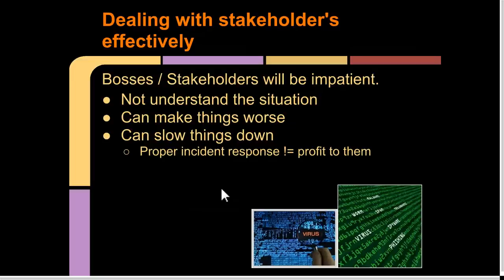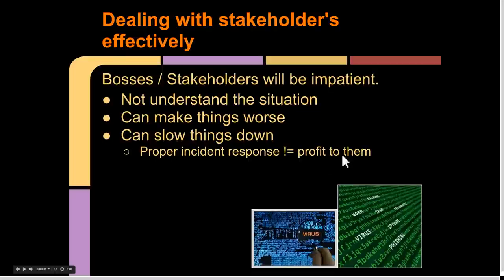Dealing with the stakeholders effectively: the executives won't understand the situation and they can often make things worse. They can often slow things down by constantly harassing and checking on the team. And almost always, it does not equal profit to them as far as they see.